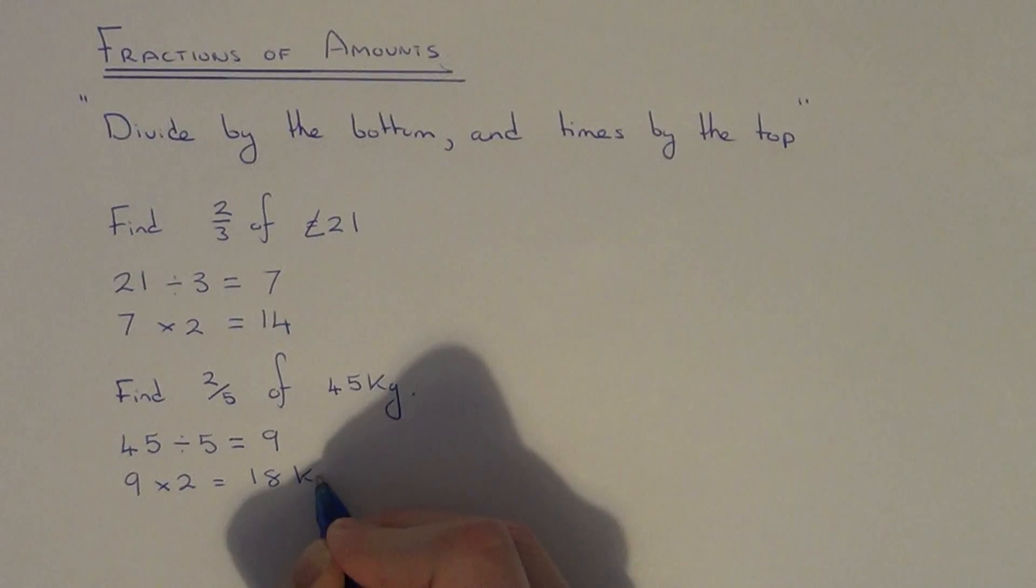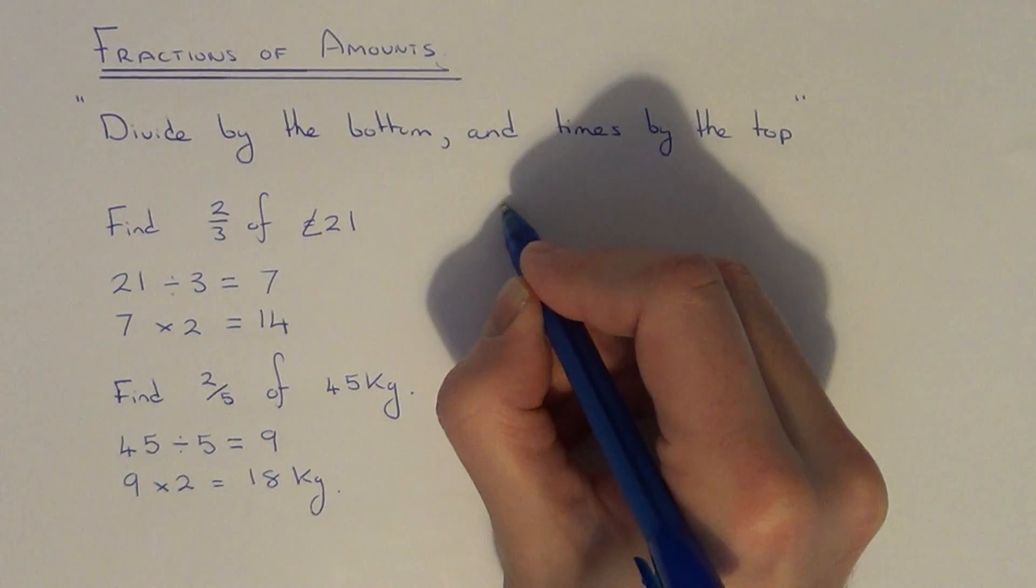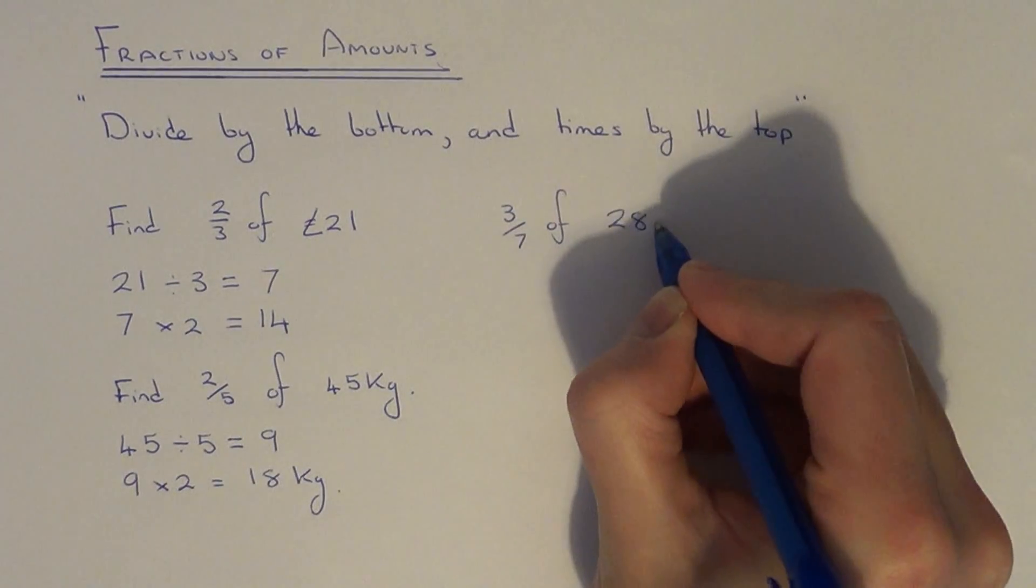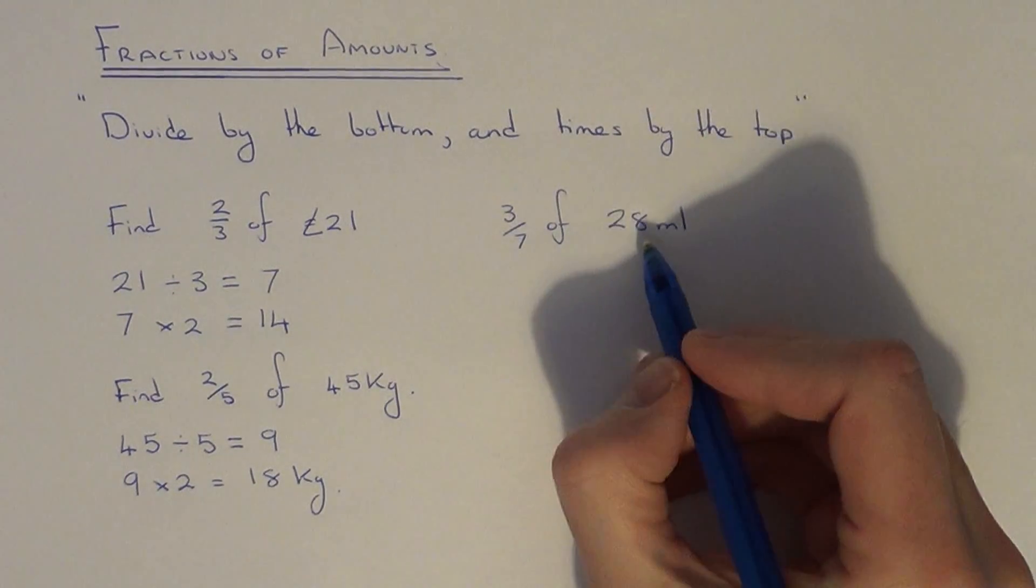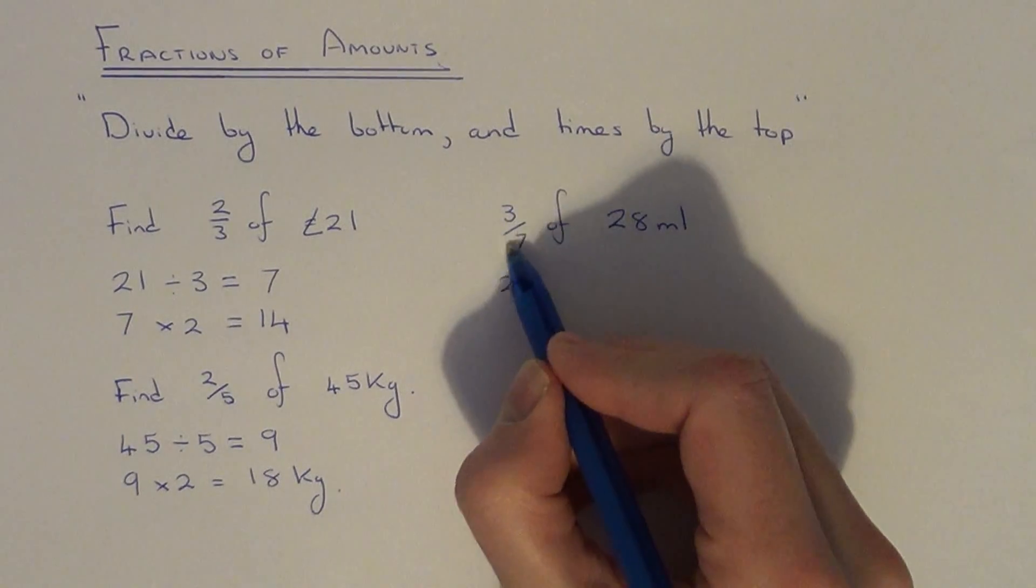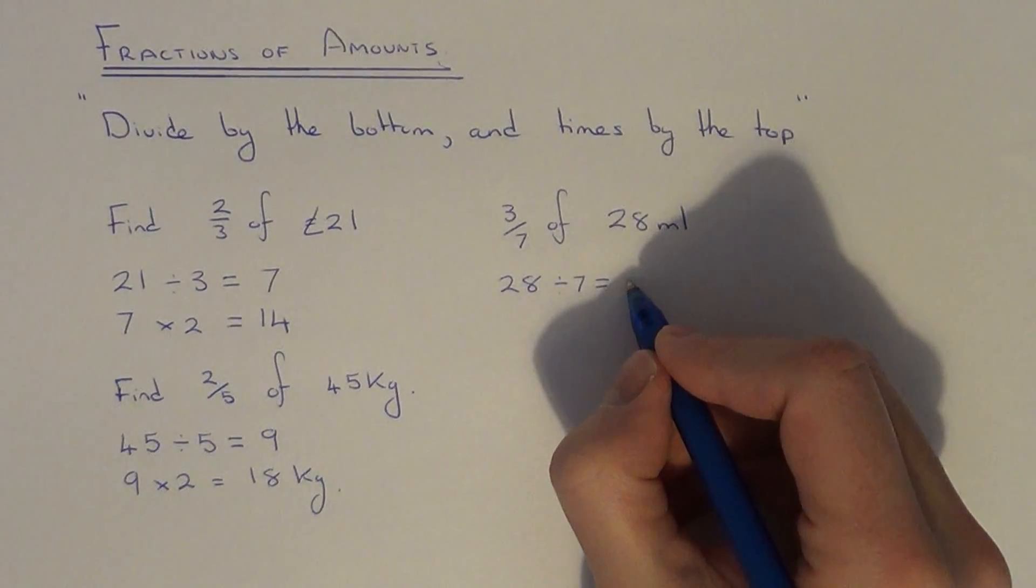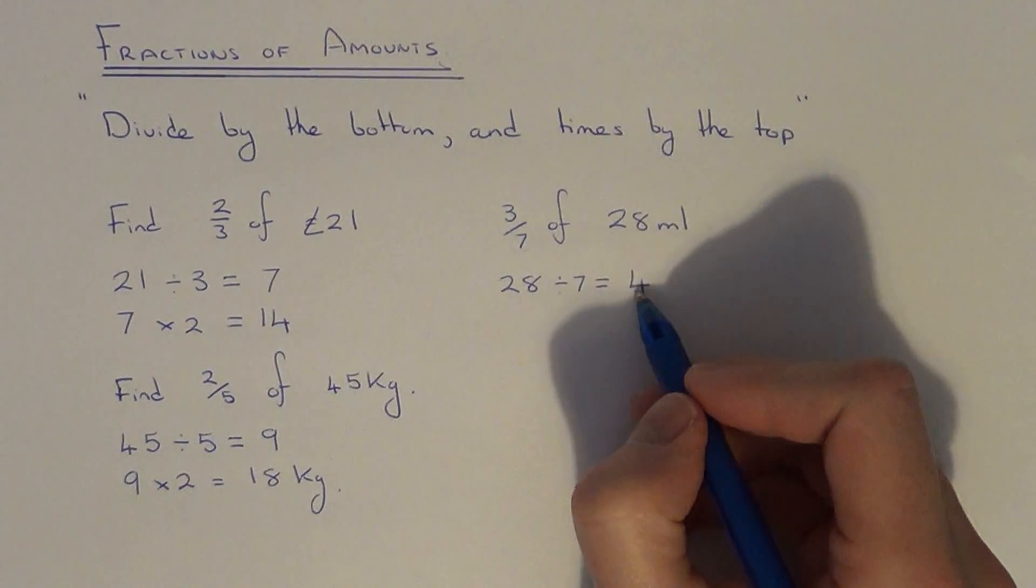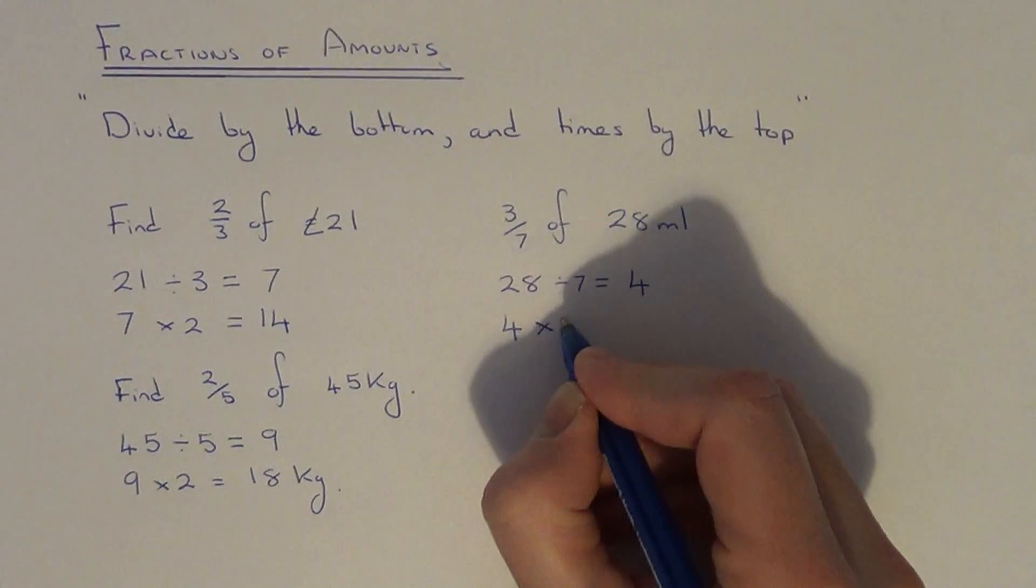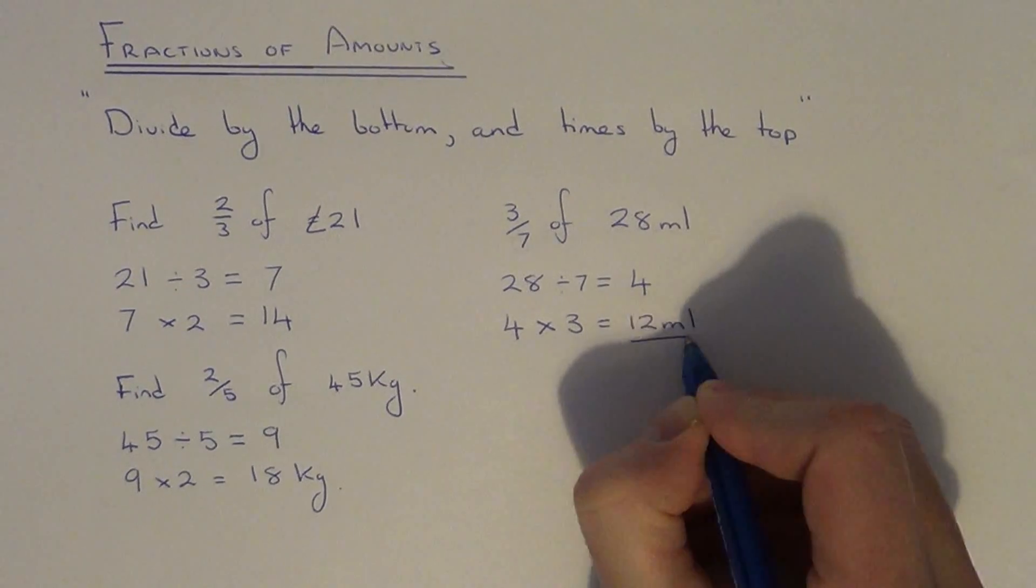So the final answer is eighteen kilograms. Let's do another example, work out three sevenths of twenty eight milliliters. So again put the amount on the first line. Divide it by the bottom number of the fraction which is seven. So twenty eight divided by seven is four. Put this number onto the next line, multiply this by the top, four times three is twelve. So the final answer is twelve milliliters.